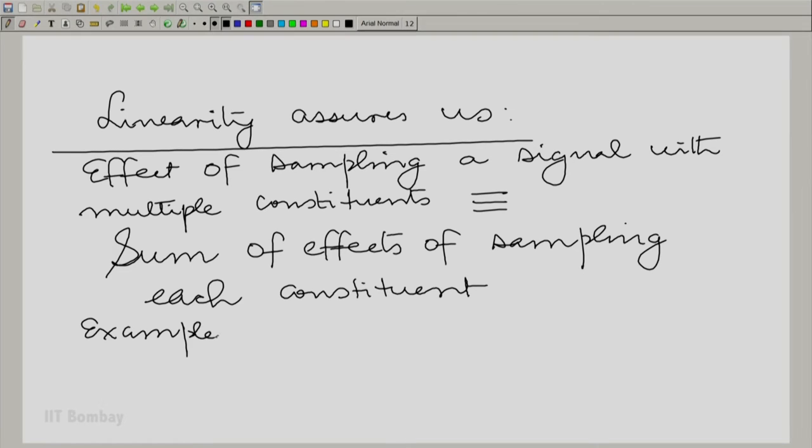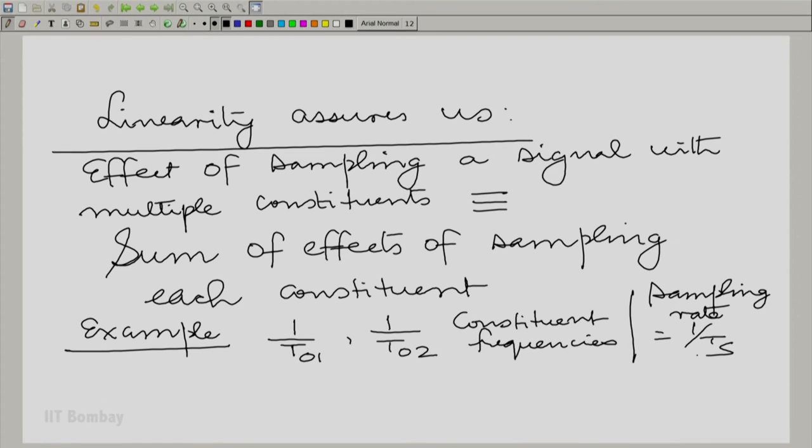So, the effect of sampling a signal with multiple constituents is essentially the linear combination or you can even say sum, because you are just summing the multiple constituents—sum of the effects. So, for example, if you have a 1/T01 and a 1/T02 and a sampling rate.